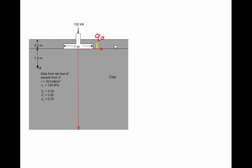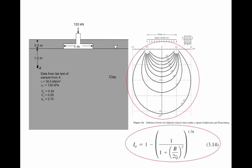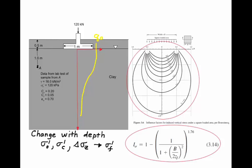In addition, since we have a finite size footing, the change in vertical stress also changes with depth. Just below the footing, we have the initial vertical stress q0. In this case, that's going to be 120 kN divided by 1 m², or 120 kPa. But we know from stress distribution that this will decrease as a function of depth, as shown by the yellow line. We can compute this decrease using either the stress bulbs from the Boussinesq stress distribution, or a simplified equation for the change in vertical stress under the center of a square footing. So what's changing with depth is the initial vertical stress, the pre-consolidation stress, the change in vertical stress, and therefore the final vertical stress.